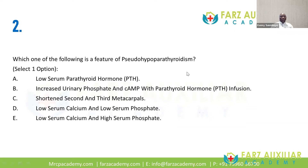Next question: which of the following is a feature of pseudo-hyperparathyroidism? Is it: A — low serum PTH; B — increased urinary phosphate and cAMP with PTH infusion; C — shortened second and third metacarpal; D — low serum calcium and low serum phosphate; or E — low serum calcium and high serum phosphate? What's the answer in this case?